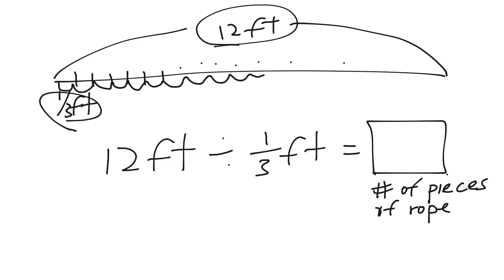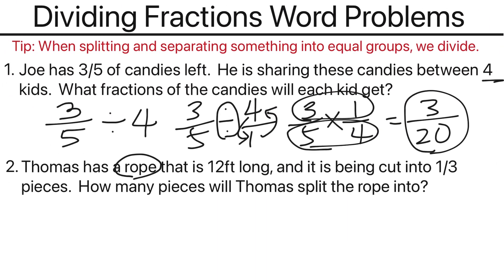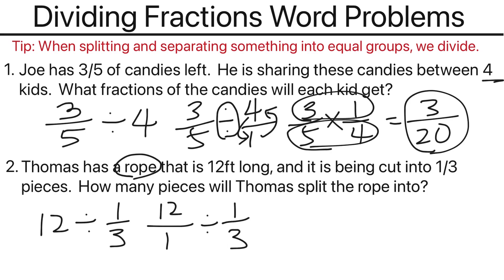Now we have the setup, so we can go ahead and divide. We have 12 divided by one-third. Dividing a whole number by a fraction, we need to first convert the whole number to a fraction. So 12 becomes 12 over 1 — we add a denominator of 1 underneath it, and that still remains 12. And we're going to divide by one-third. Now we have the setup ready: 12 over 1 divided by one-third.